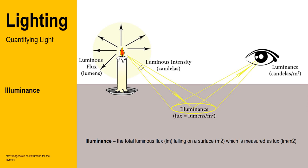The amount of light that falls onto a surface is a measure of the luminous flux over a defined area. Illuminance is the total luminous flux over one meter squared and is measured as lux, which is lumens per meter squared.